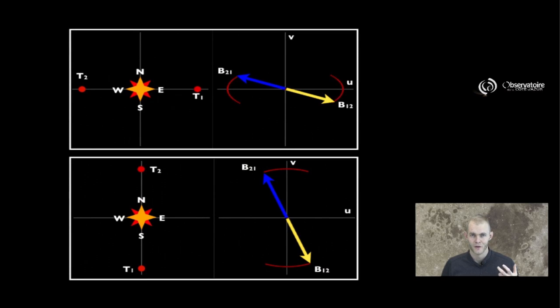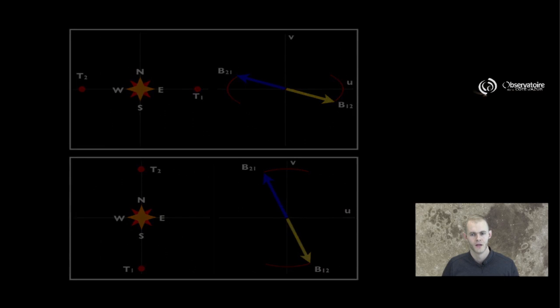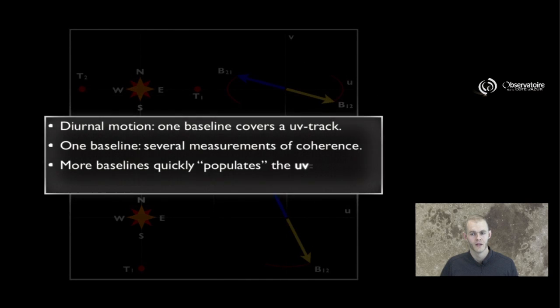But a more fortunate consequence is that, although you have a single pair of telescopes forming only one baseline, which in theory would only give you access to one measurement, the fact that the baseline shrinks and rotates actually gives you access to many more points in the plane of the spatial frequencies you're trying to sample.